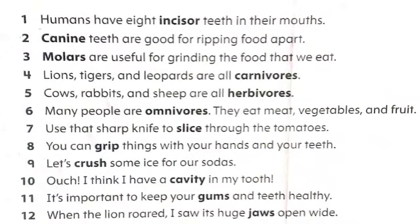Dear students, now listen to sentences containing these words. Number one: humans have eight incisor teeth in their mouths. Number two: canine teeth are good for ripping food apart. Number three: molars are useful for grinding the food that we eat. Number four: lions, tigers and leopards are carnivores.